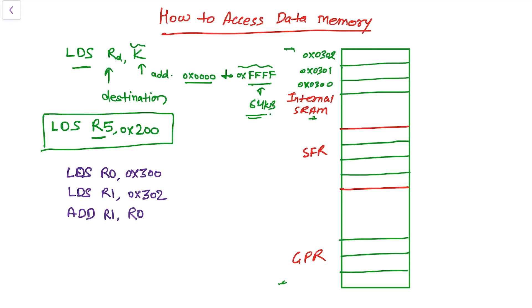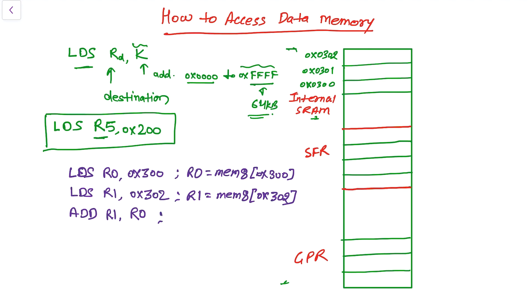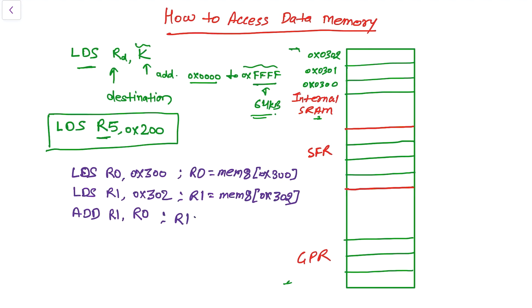Then what happens in this case? R0 will be loaded with the content of 0x300. However, R1 will be loaded from the 8-bit memory space data, the address pointed by 0x302. And then finally the result will be placed here into R1, that will be R1 equals R1 plus R0.